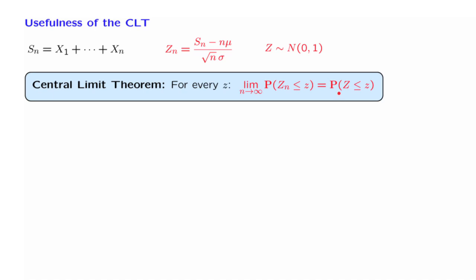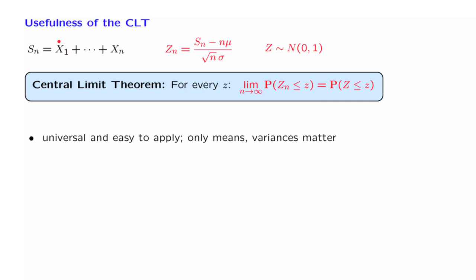Furthermore, it is very useful, and one key reason is that it is universal. It doesn't matter what the distribution of the X's is. No matter what the distribution is, still in the limit, this standardized version of the sum is going to behave like a normal random variable.